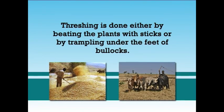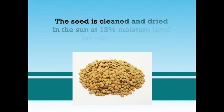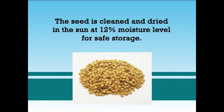Lentils should be harvested when the pods ripen but the plants have not become dead ripe, otherwise a large quantity of produce may be lost due to shattering. Threshing is done either by beating the plants with sticks or by trampling under the feet of bullocks. The seed is cleaned and dried in the sun at 12% moisture level for safe storage.